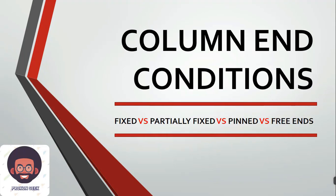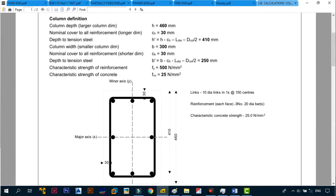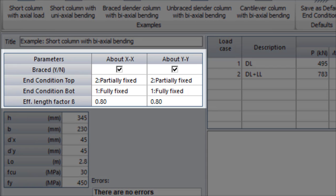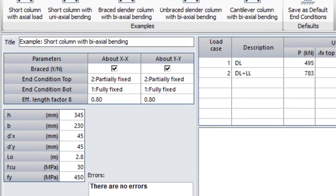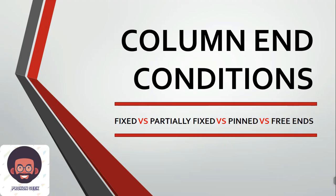Welcome back to the channel. This is the Program Geek and in today's video we need to look at column end conditions when it comes to designing your columns — specifically what constitutes a fixed, partially fixed, pinned, or free end of a column. This is important because whether you are doing hand calculations or designing using software, there will be sections where they request you to input the column end conditions. If you don't know the difference, you will input the wrong things and get the wrong result, so your designs need to be safe and economical.